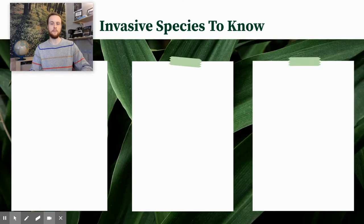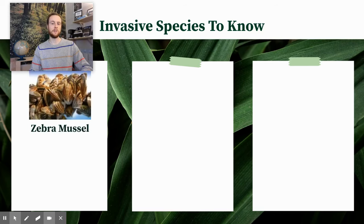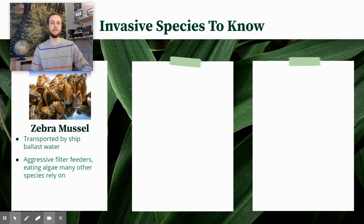Now we'll go over some textbook AP Environmental Science invasive species examples you need to know. The first is the zebra mussel — a small mussel native to the Black and Caspian Seas, but introduced into the United States and Canada via the St. Lawrence Seaway. Large cargo ships carried zebra mussels in their ballast water — water ships take on to stay balanced while traveling port to port. When they reach their destination, they discharge the ballast water, and the zebra mussels were discharged with it into the St. Lawrence Seaway and Great Lakes ecosystem. They are very aggressive filter feeders, taking water through their bodies and filtering out small particulate — sediment, zooplankton, or algae — as their food source.